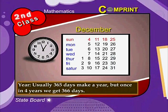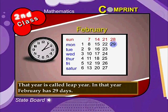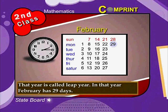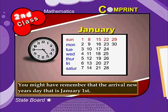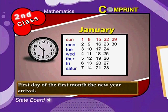Year: Usually 365 days make a year. But once in four years, we get 366 days. That year is called a leap year. In that year, February has 29 days. You might have remembered that the arrival of New Year's Day — that is January 1st — is the first day of the first month, the new year arrival.